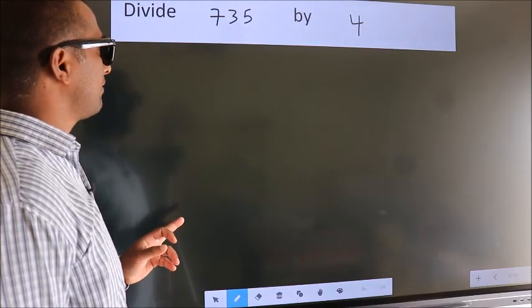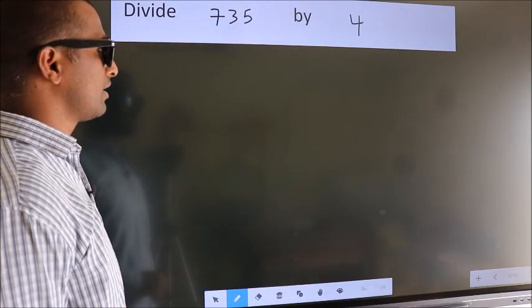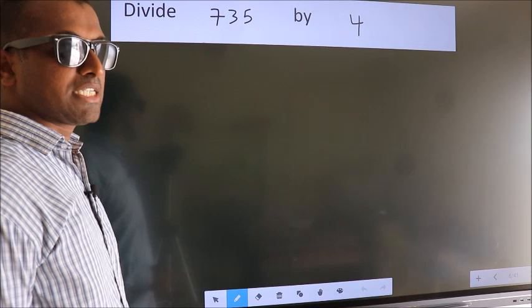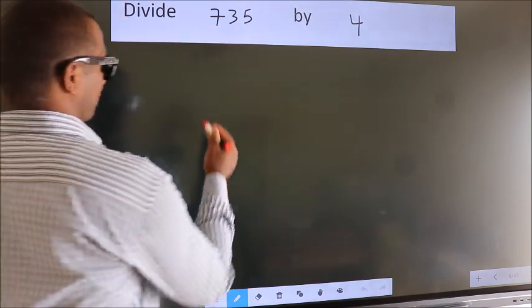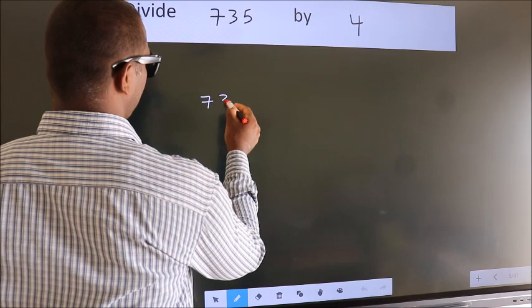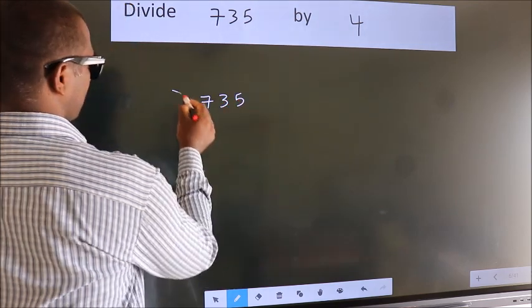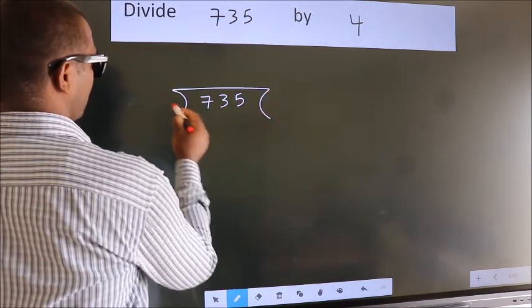Divide 735 by 4. To do this division, we should frame it in this way. 735 here, 4 here.